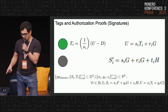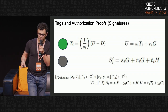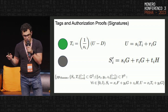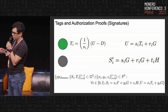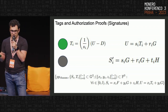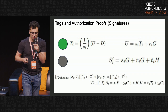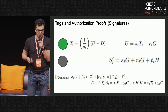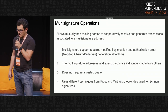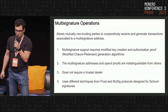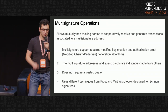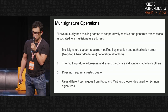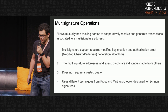The original Chaum-Pedersen proof ensured discrete logarithm equality. The generalized version allows proving the relevance of a certain exponent in more generic commitments and also allows generating multiple assertions with a more optimized proof. Since the Chaum-Pedersen proof is quite similar to Schnorr signature protocols, this is what allows us to support multi-signature operations.